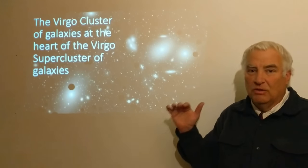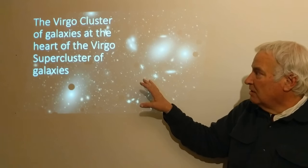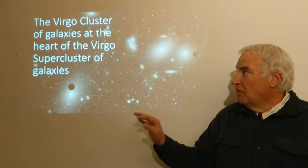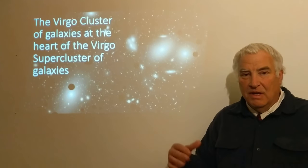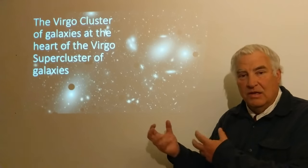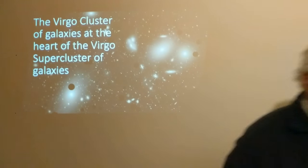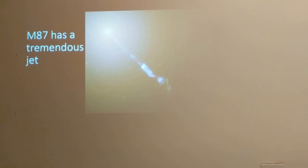A supercluster has a very specific definition. A supercluster is not simply a large cluster of galaxies — the Virgo cluster is definitely a large, rich cluster — but the Virgo supercluster is a cluster of galaxy clusters. The meaning of a supercluster is a grouping of several or many galaxy clusters clustered together, representing a very high level of the hierarchy of gravitational binding.